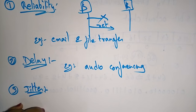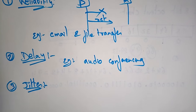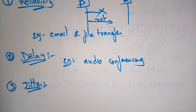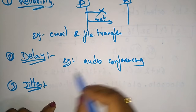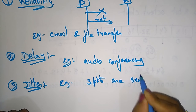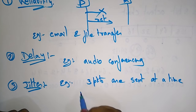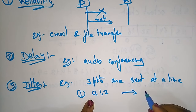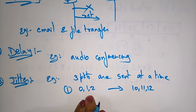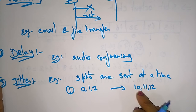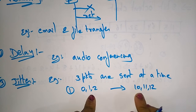Next is jitter. Jitter is the variation in packet delay. If the difference between delays is larger, it is high jitter; if the difference is smaller, it is low jitter. For example, suppose three packets are sent — labeled 0, 1, 2 — and are received at times 10, 11, 12. The delay is the same for all packets, so the sequence is maintained. This is acceptable for telephonic conversation.